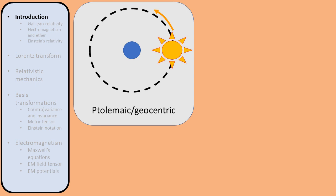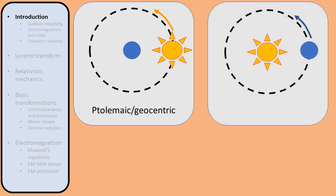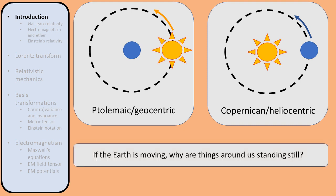During the Renaissance, it was proposed that the Earth and other planets revolve around the Sun. This is called the Copernican or heliocentric worldview. But if the Earth is constantly spinning around its own axis and revolving around the Sun, why does it look like everything around us is standing still? We don't normally feel the ground move under our feet, buildings and trees aren't constantly shaking back and forth, and we don't see flying birds getting swept away as the Earth beneath them is moving.